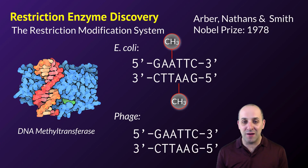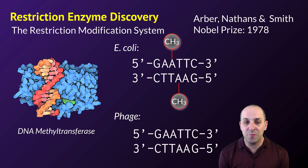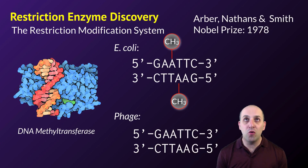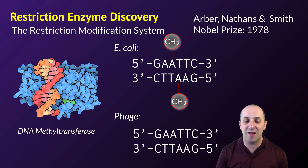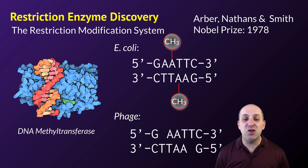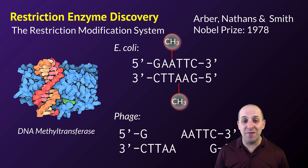They can only cut unmethylated DNA. As long as the methyltransferase system is working correctly inside the cell, the only unmethylated DNA that's going to be found by restriction enzymes is DNA that should not be there, and so it'll get cut.